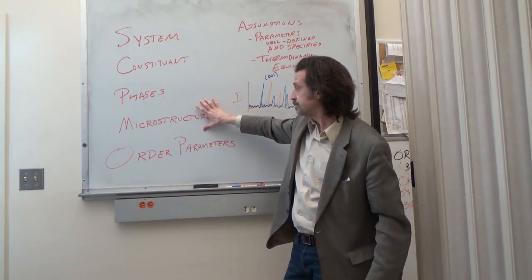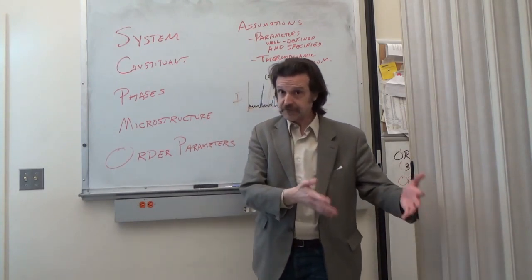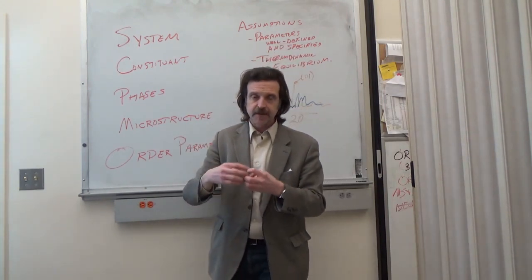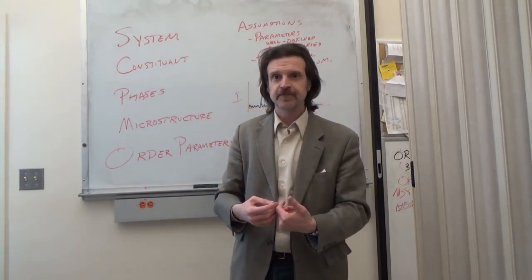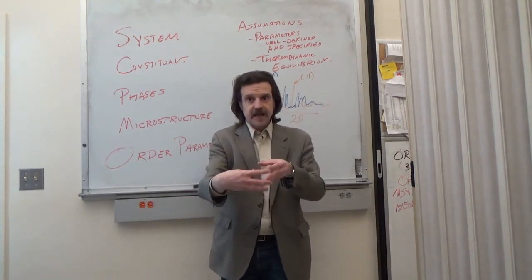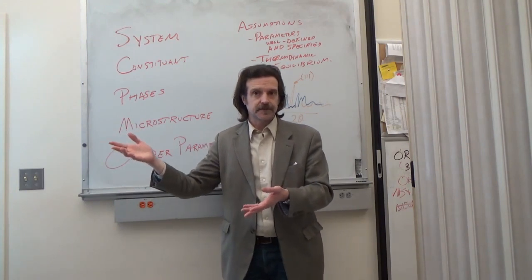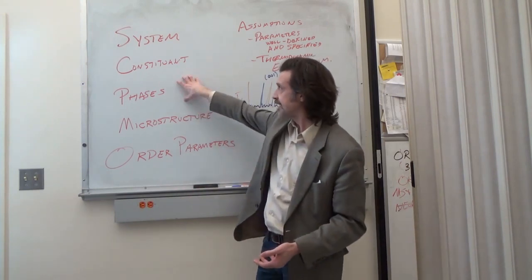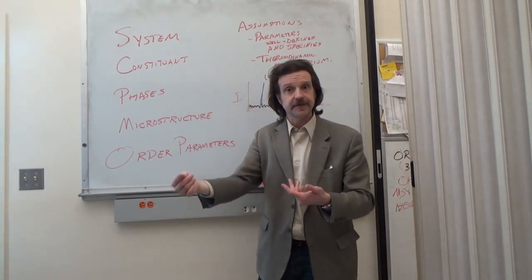This brings us to the final concept: microstructure, which is what material scientists are very interested in — how all the little crystallites arrange themselves in our material. The microstructure is different from the phase; the microstructure is composed of phases. It is a characterization of the size of the crystals or phases, their shape, and the stacking sequence of phases. So a microstructure, a phase, and a constituent are all part of a system, but they are distinct from one another.